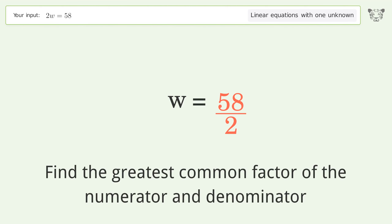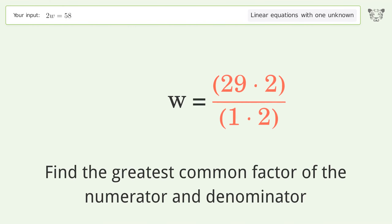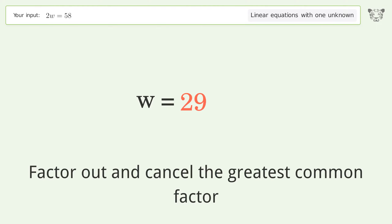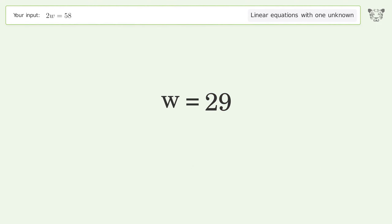Find the greatest common factor of the numerator and denominator. Factor out and cancel the greatest common factor. And so the final result is w equals 29.